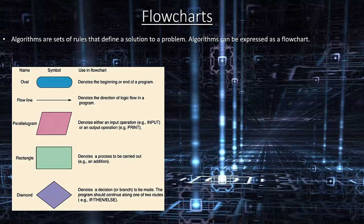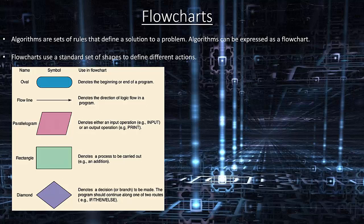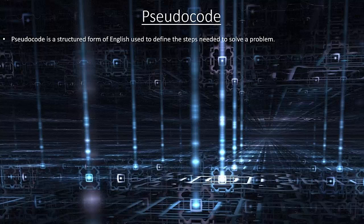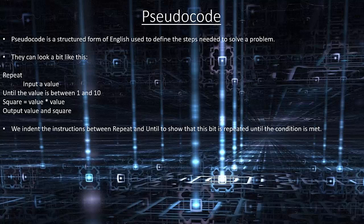Flowcharts. Algorithms are sets of rules that define a solution to a problem. Algorithms can be expressed as a flowchart. Flowcharts use a standard set of shapes: an oval denotes the beginning or end of a program; a flowline denotes the direction of logic flow; parallelograms denote input or output operations; rectangles denote a process to be carried out; and diamonds denote a decision or branch to be made. Pseudocode is a structured form of English used to define the steps needed to solve a problem. We indent instructions between repeat and until to show that section is repeated until the condition is met.